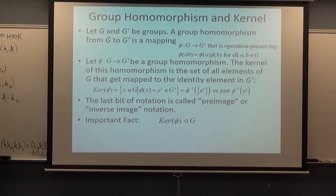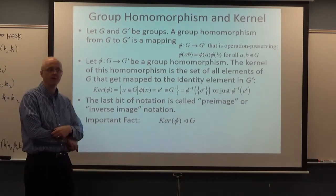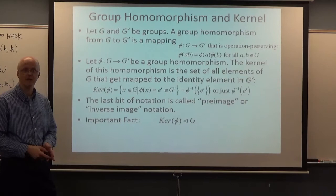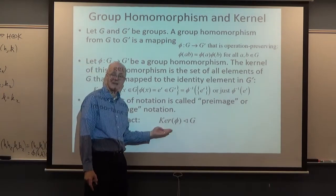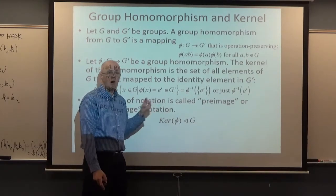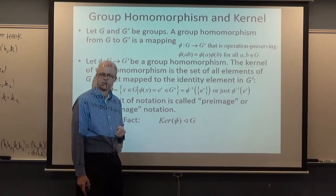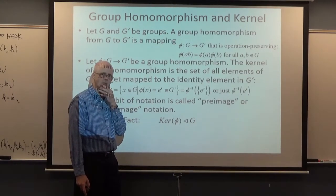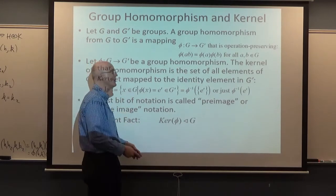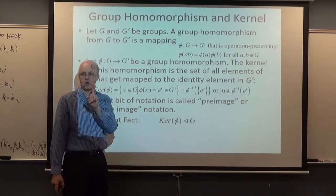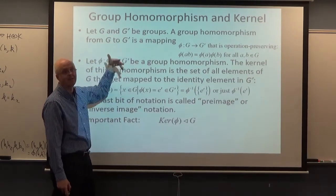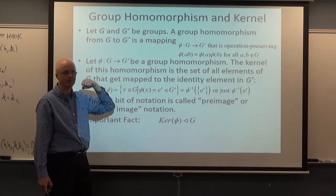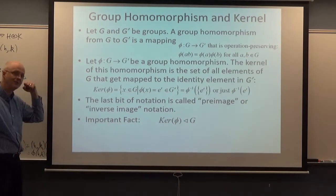The kernel is always a normal subgroup of G, no matter what. Given any group G — abelian or non-abelian — and any group homomorphism from G to some other group G′, the kernel of φ will always be normal. The kernel might be trivial (just the identity) or it might be all of G, in which case φ maps everything to the identity — a trivial homomorphism, but it always exists. It's the only homomorphism you can definitely say exists between two arbitrary groups.